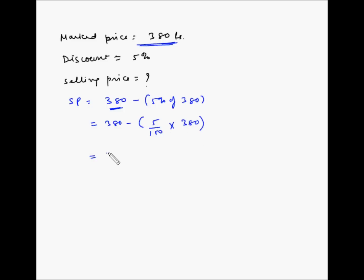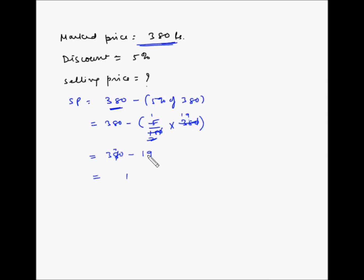So 380 minus — the zeros cancel — 5 ones are 5 and 5 twos are 10, giving 19. So 380 minus 19, which equals 361. So 10 minus 9 is 1, 7 minus 1 is 6, and 3 — so 361 rupees is the selling price.